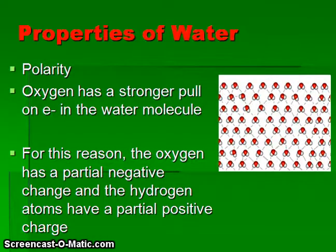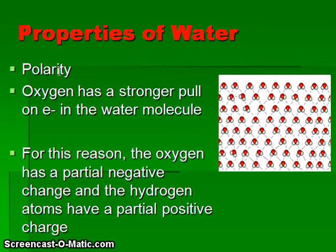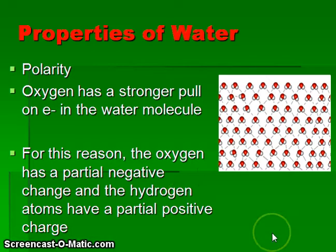Many of the properties of water are due to the fact that it has a bent structure. One example is polarity — oxygen has a much stronger pull on electrons in the water molecule than hydrogen does. The oxygen atom pulls electrons so they spend more time on the oxygen side of the molecule, giving it a partial negative charge, while the hydrogen side has a partial positive charge.